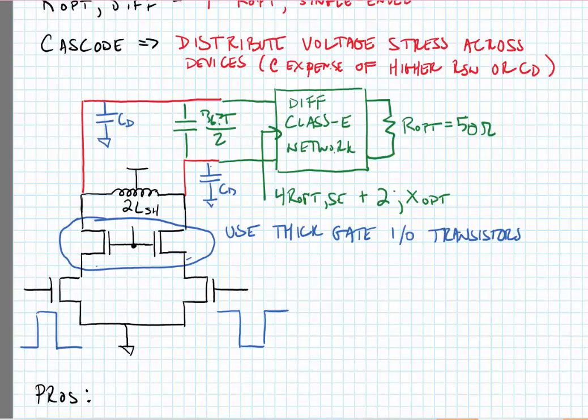The reason that we can use the thick gate IO transistors is that these devices are not switching, but they're basically staying in deep sub-threshold and just being used to distribute voltage stress. Now, you note, if you use thick gate devices, typically they need to be a bit wider, which means that we would have additional parasitic at the drain that may have to be absorbed into the Class E network.